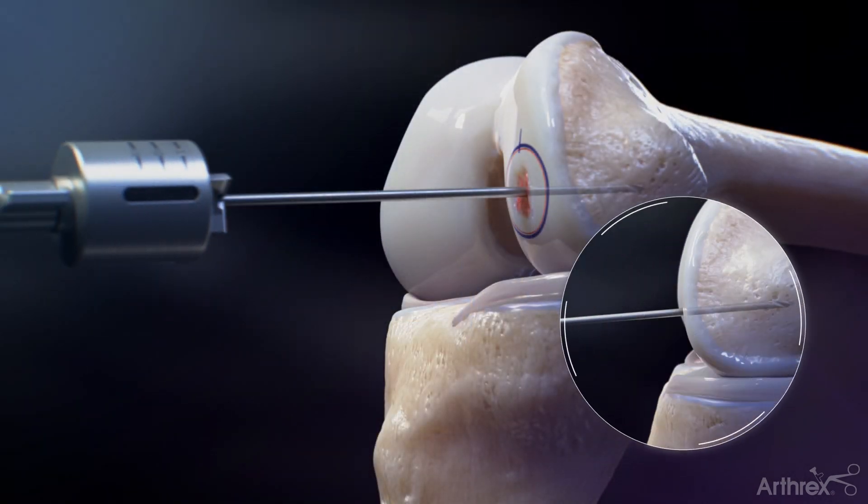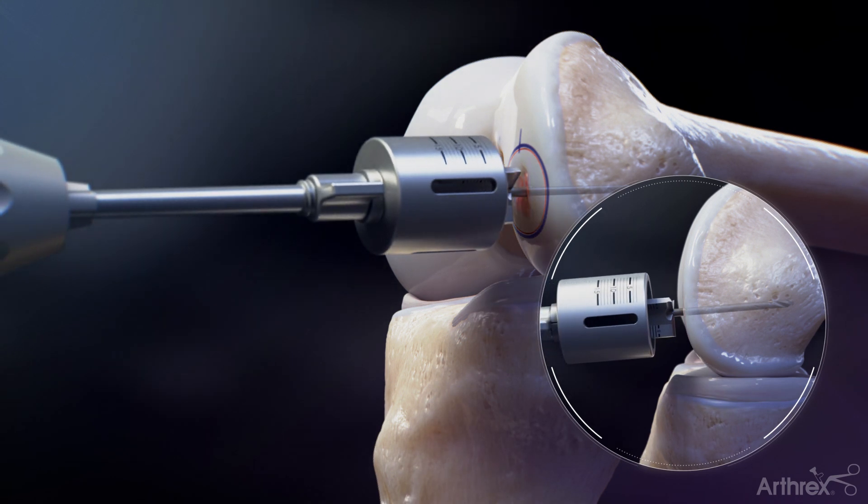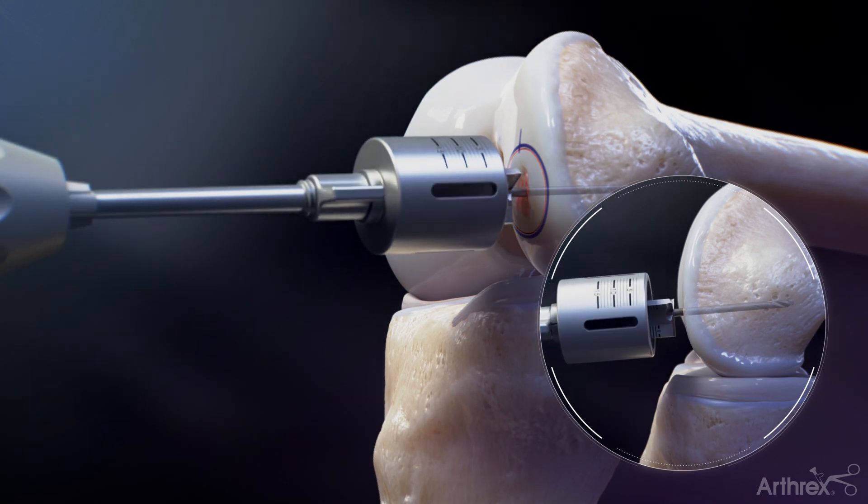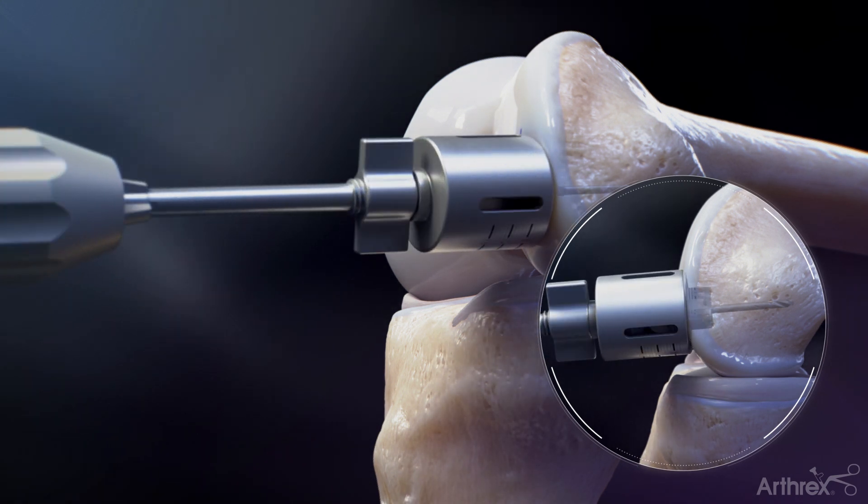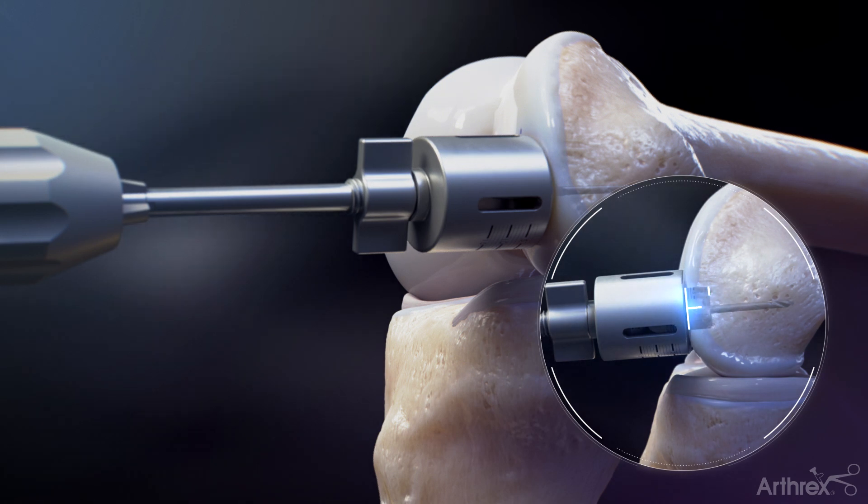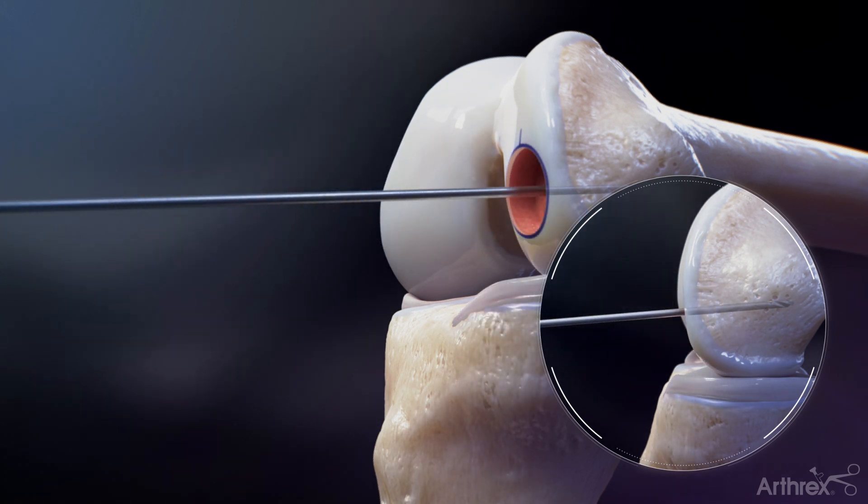Secure the recipient site reamer with depth stop to the drill and place it over the drill tip guide pin. Drill the counterbore into the defect to the desired depth, typically 5 to 8 mm. Confirm bleeding subchondral surfaces.